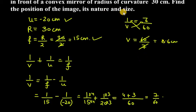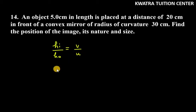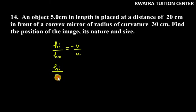Now we need to find the size and nature of the image. To find the size, we use the formula: hi over h0 equals minus v over u. Hi is unknown, h0 is given as 5 cm. V is 8.6 cm (or 60 over 7) and u is minus 20.